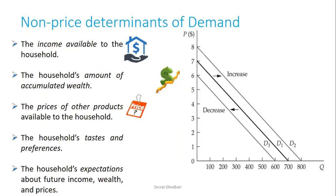The third factor is the prices of other products available to the household, especially substitutes or complements. For example, if the price of Coca-Cola increases, the demand for Pepsi will increase and we will have a shift from D1 to D2 in the Pepsi market, because it's the price of Coca-Cola — a substitute — that is changing. The fourth factor is household tastes and preferences. Based on a new study, if oat is considered healthy, people will demand more and we will have an increase in demand from D1 to D2.